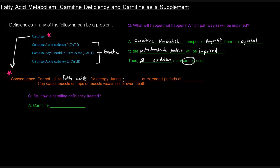When we're fasting or exercising for long periods of time — for instance, if you jog for a few miles — that's an extended period of time. If you're fasting, your body is being fueled by fatty acids. So you cannot utilize fatty acids for energy during fasting or extended periods of exercise if you have a carnitine deficiency.